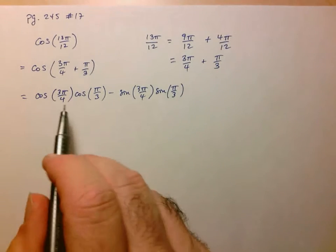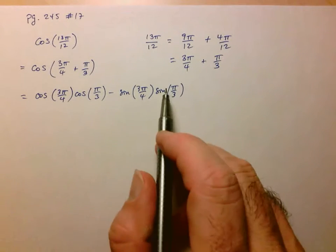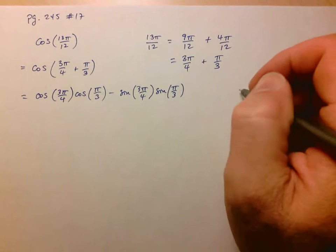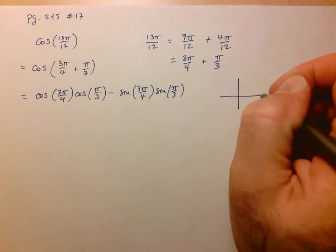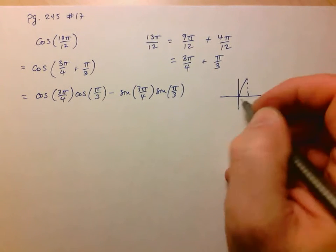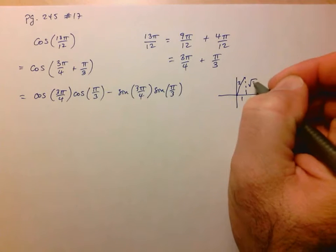And now here I've got a whole slew of trig ratios that I can determine the exact value of. So I'll make myself a couple of little diagrams. So here let's start with π over 3. 1, 2, root 3.